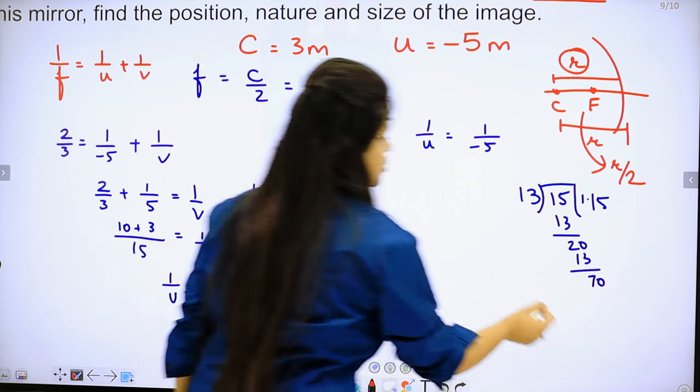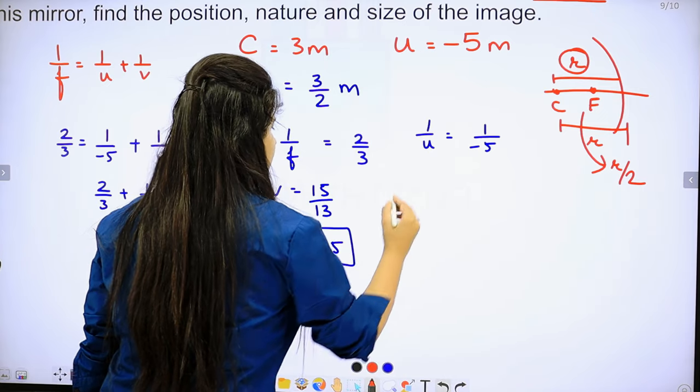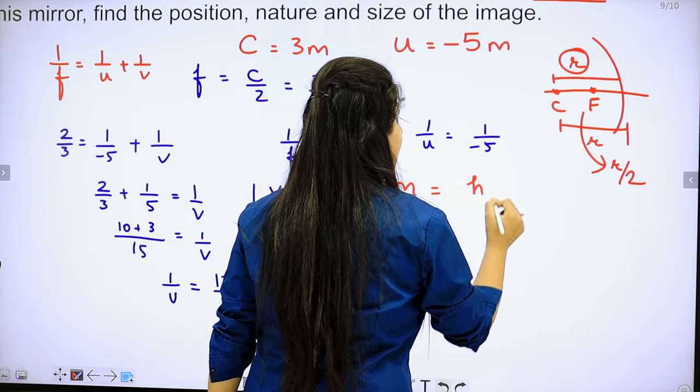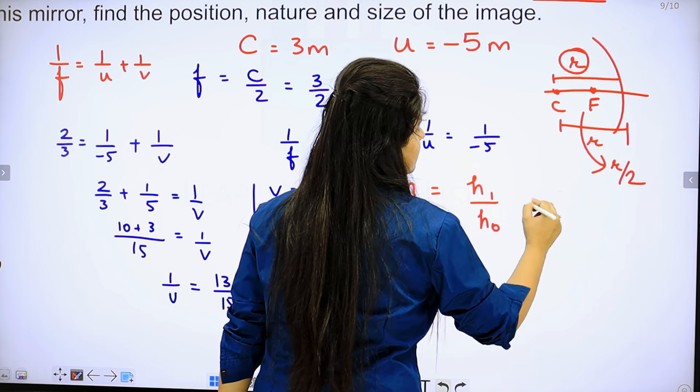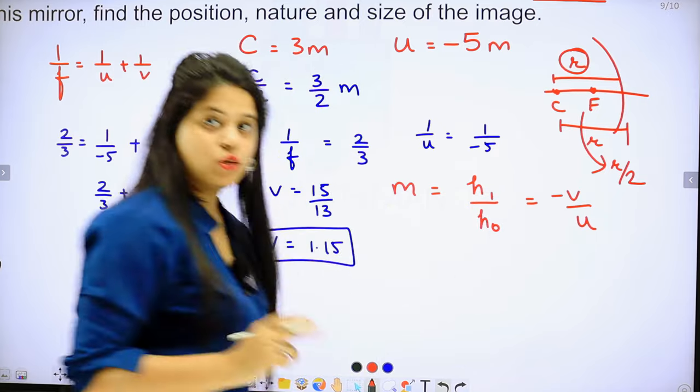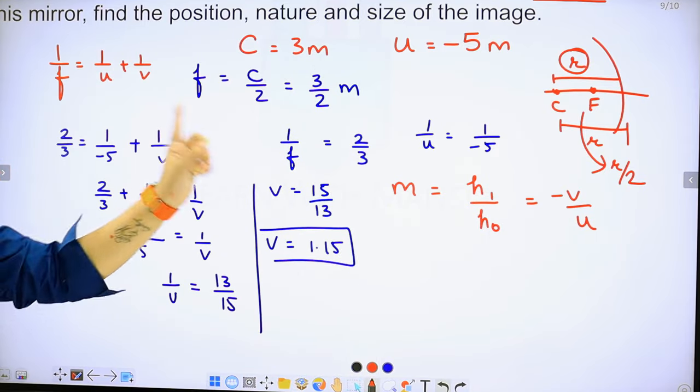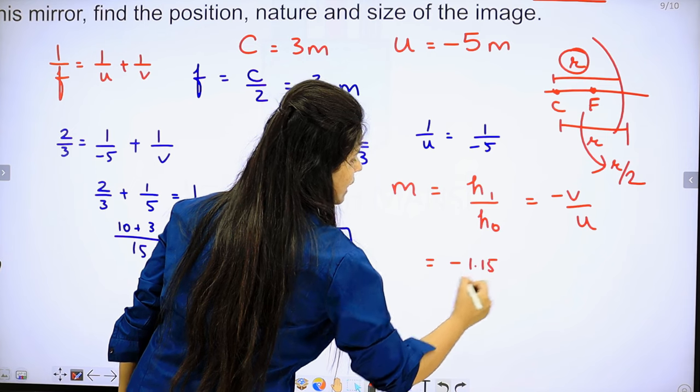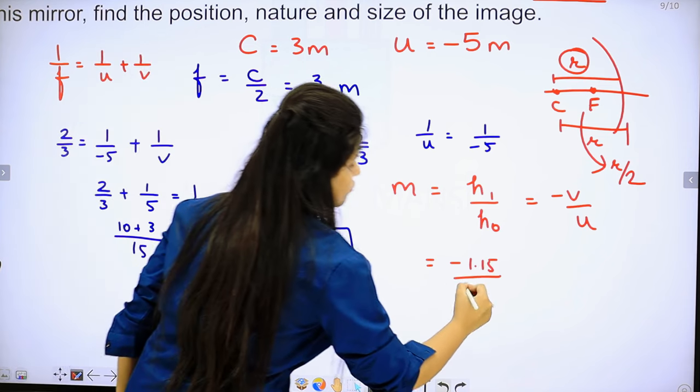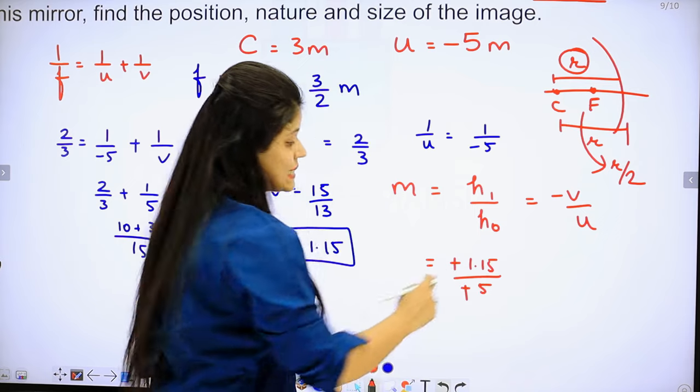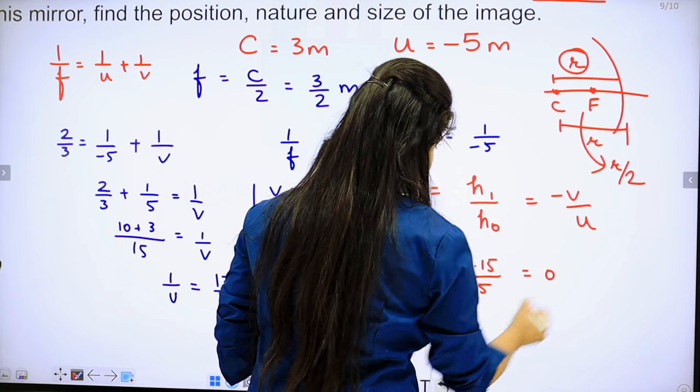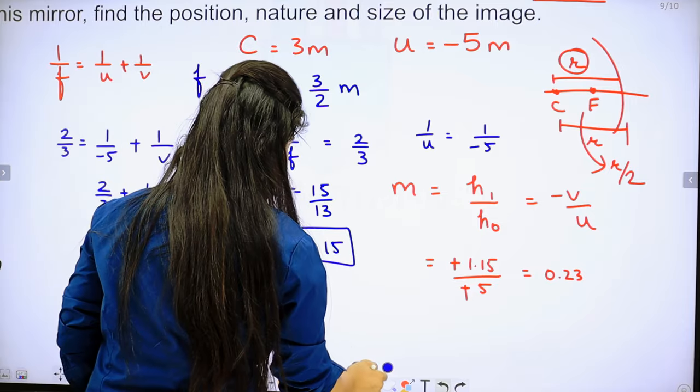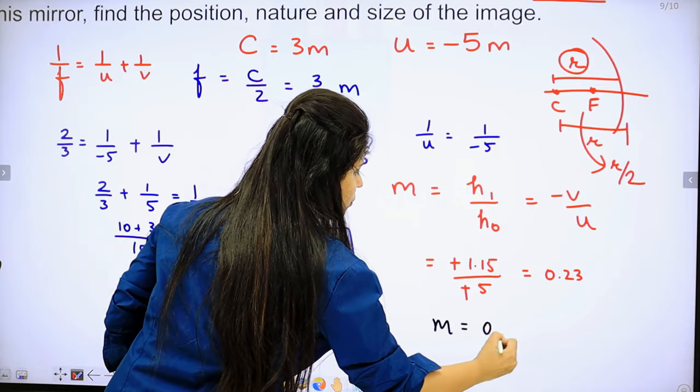Now we will find magnification. If you remember, when we discussed the mirror formula in the last session, we looked at magnification. One was height of image upon height of object, and one was minus V upon U. In this case, we have V and U both. So this will be minus 1.15 upon U. How much is U? Minus 5. Minus and minus cancel. If we divide it, it will be 0.23. So the value of M is 0.23.